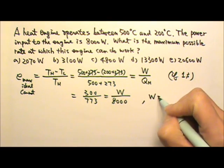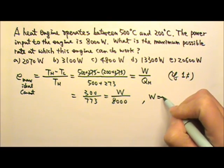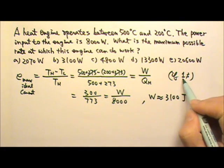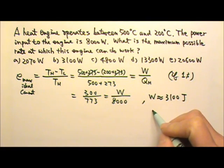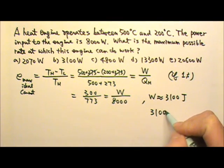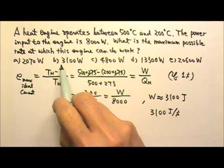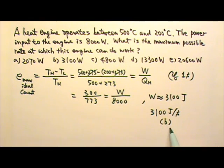So the W can be found as about 3,100 joules. And since we were looking at one second, that means this is 3,100 joules per second. So it's 3,100 watts. The answer is B.